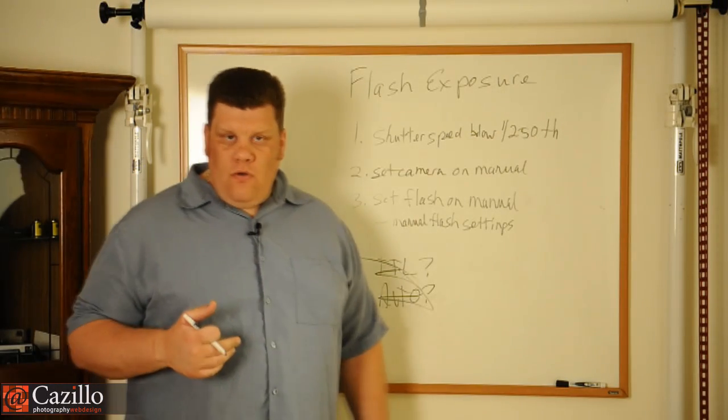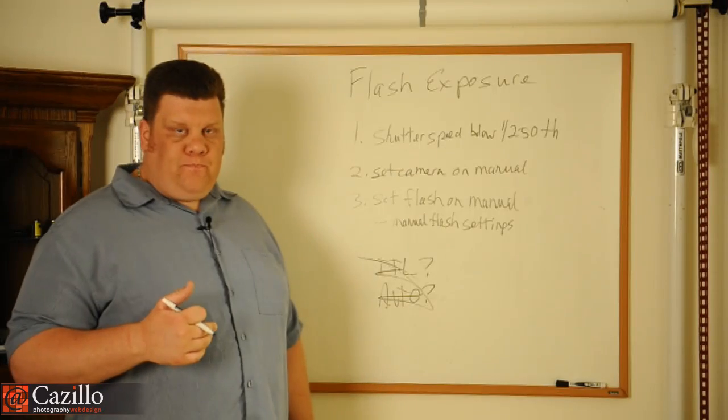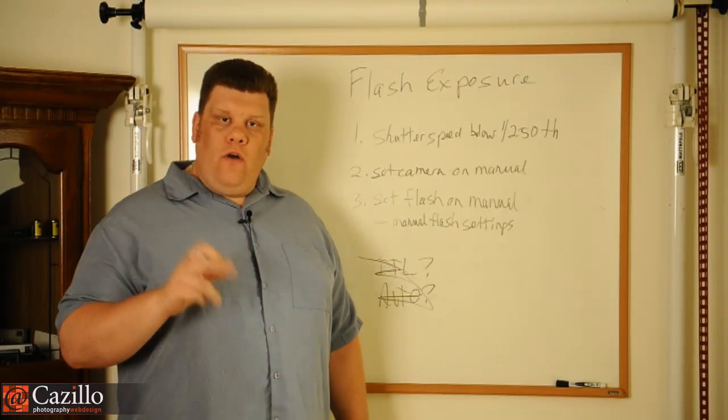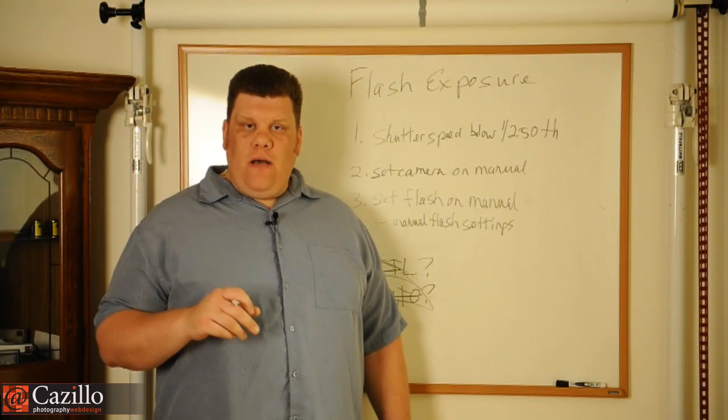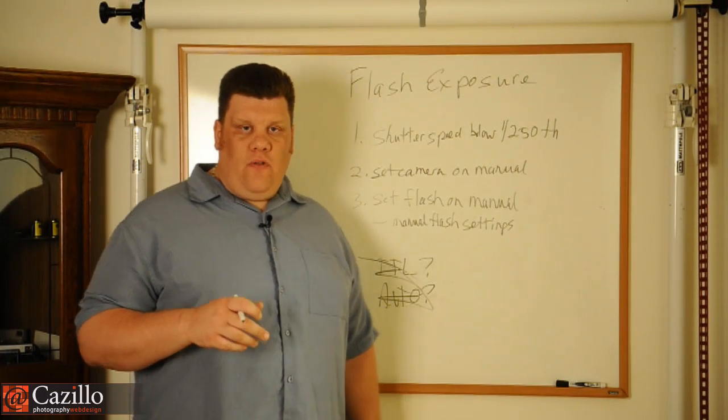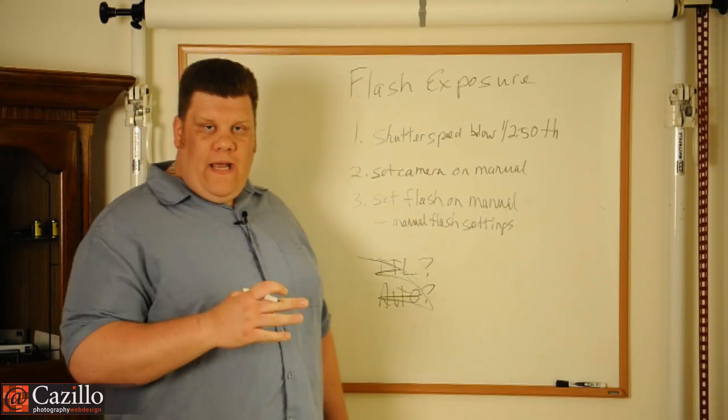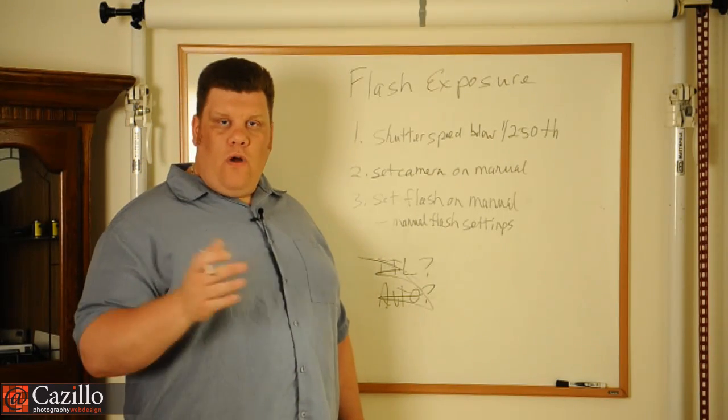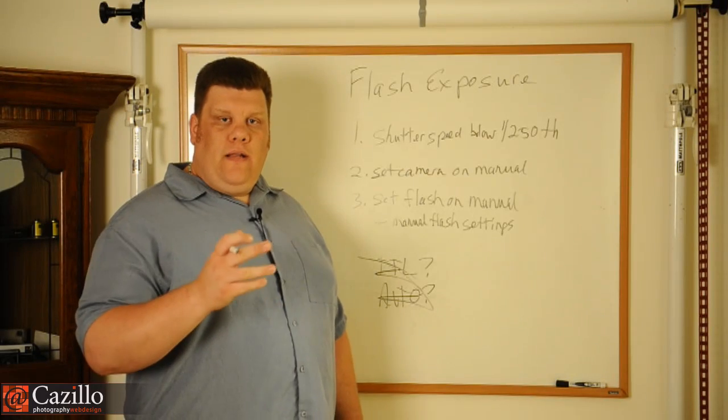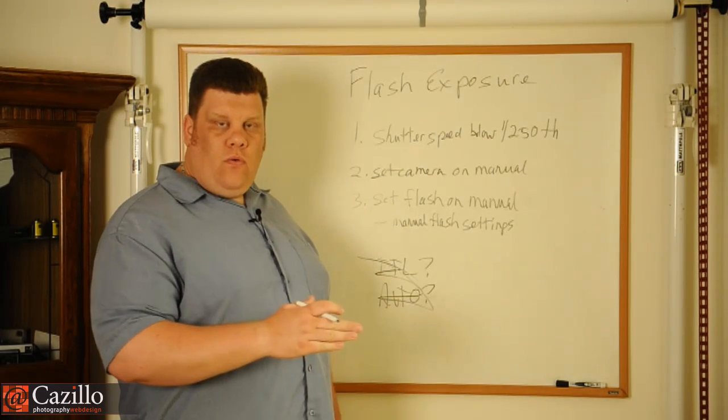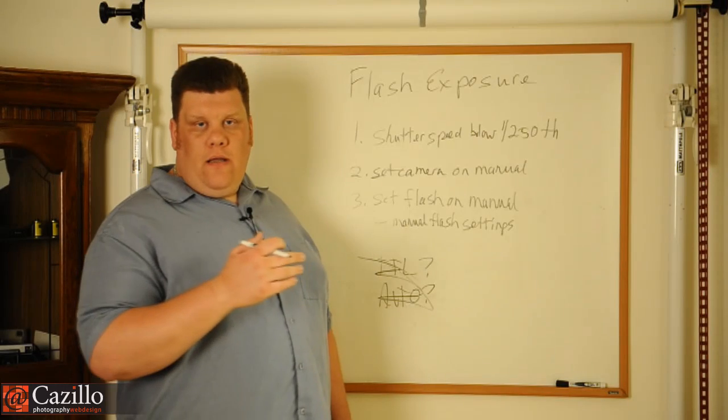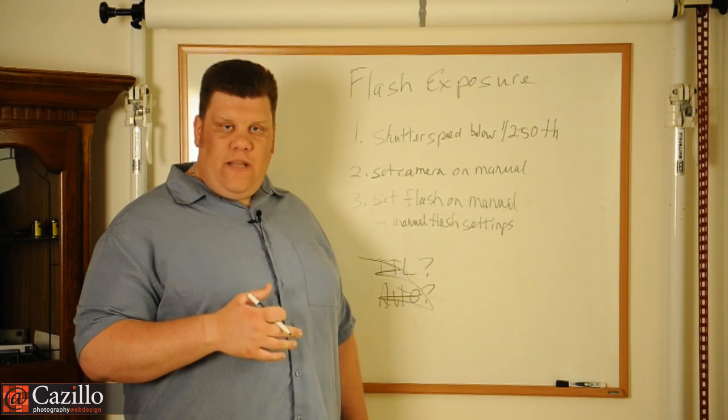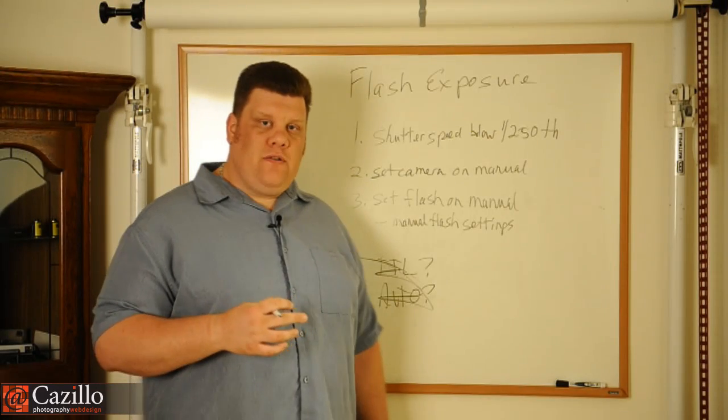So how do those manual modes work on the flash? It's actually very, very easy. One over one is full power. That's the most amount of power that's going to come out of that flash. Then one half, one over two is half power, or one stop down. And then if you go down again, down to one quarter, eighth, sixteenth, and most of my strobes go down to, I think it's 1/128th power in the Nikons. I think most cannons do the same.